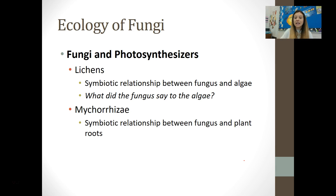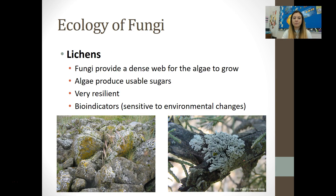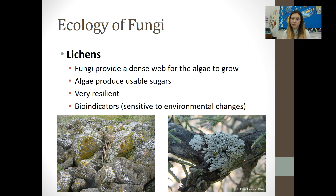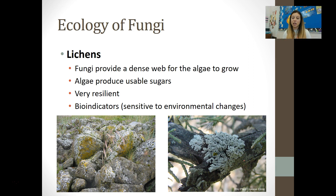Lichens are a symbiotic relationship between a fungus and an algae. They exist as one organism even though they are two separate organisms in a mutualistic relationship — the algae give sugars to the fungus, and the fungi obtain and provide nutrients for the algae. Lichens are very resilient and can grow in harsh environments, making them a great bio-indicator. If there are lots of lichens, the area is very healthy. If they are absent, that typically means something bad has happened and the environment can't support much life.